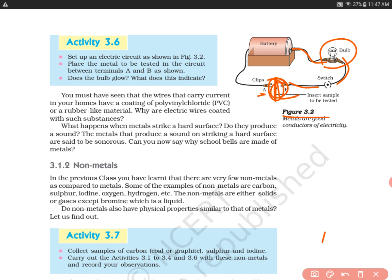In Activity 3.5, we discussed that metals are good conductors of heat. That's why our utensils are mostly made of metals. We don't have utensils made of wood because wood's ignition temperature is very low.